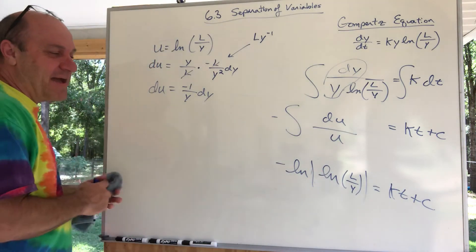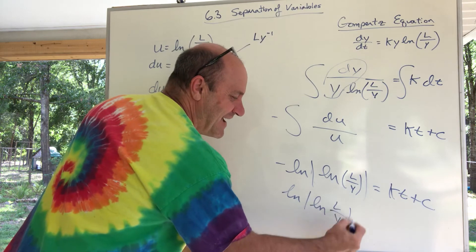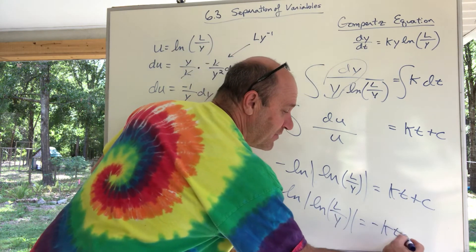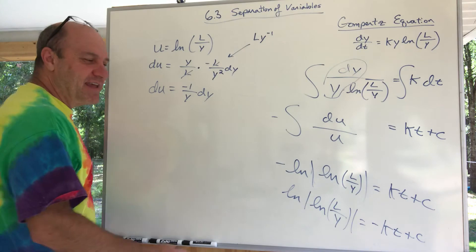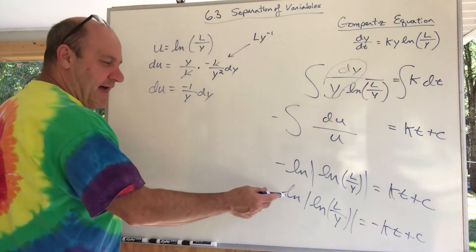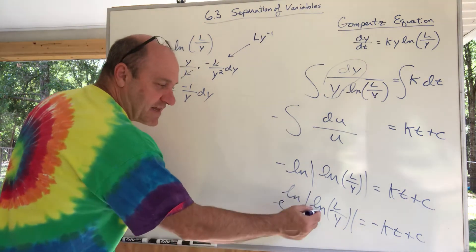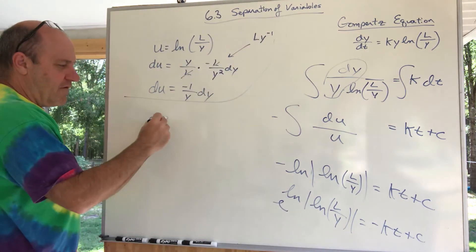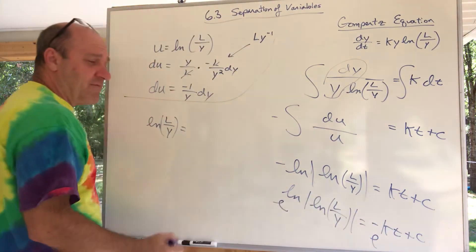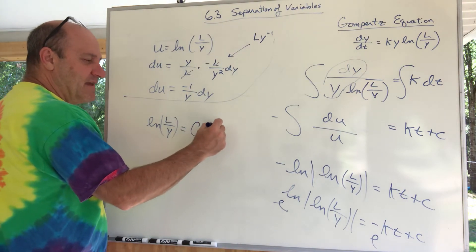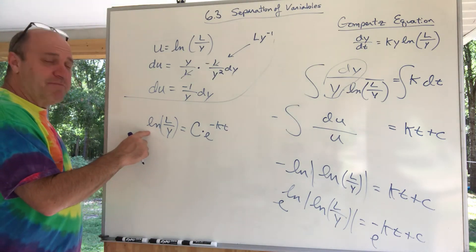To get rid of the outer ln, I exponentiate both sides. The left side simplifies to ln(L/y), and the right side becomes C times e to the negative kt — we've done that move before where a plus C turns into a multiplied C times the exponential. So: ln(L/y) equals C e to the negative kt. Now I exponentiate both sides again to get rid of the remaining ln: L/y equals e to the (C e to the negative kt).